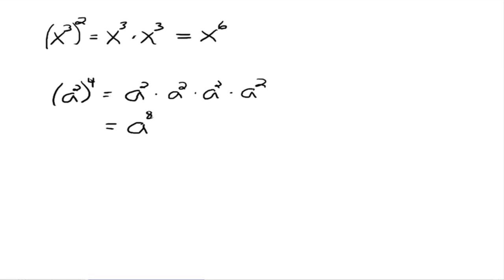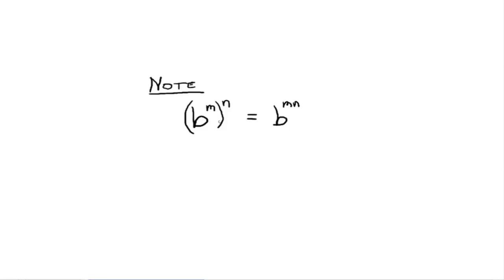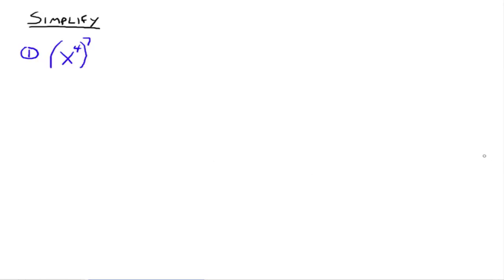That's really the idea for exponential expressions raised to powers. The rule: m and n are just numbers. If you've got a base raised to some exponent, and all of that is raised to another exponent, then you multiply those two exponents together, keeping the original base. For example, x to the fourth to the seventh — multiply the 4 and the 7 together — gives you x to the 28th.